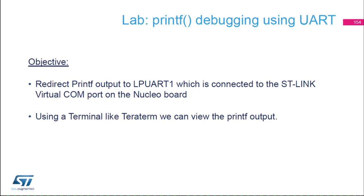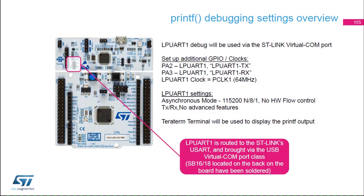Using a terminal like Tera Term, we're going to view the printf output. PA2 and PA3 of the STM32G0 can be configured as an alternate function for LP UART1, and they are connected to the ST-Link, which is located on top of your Nucleo board. That's what we're going to use to redirect printf via the virtual COM port of the ST-Link.